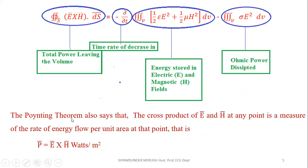The Poynting theorem also states that the cross product of the electric field and magnetic field at any point is a measure of the rate of energy flow per unit area at that point, that is P̅ = E̅ × H̅ watts per meter square.